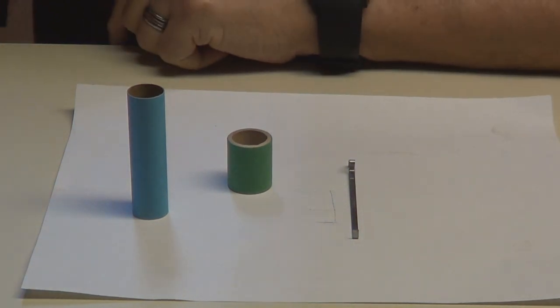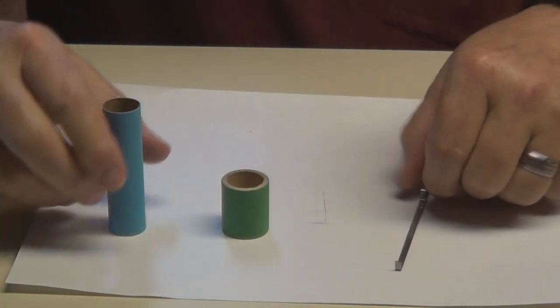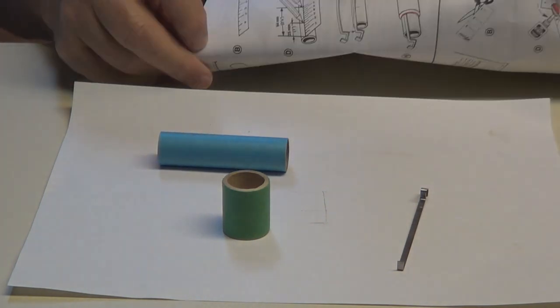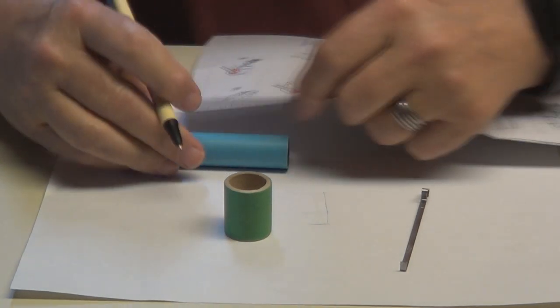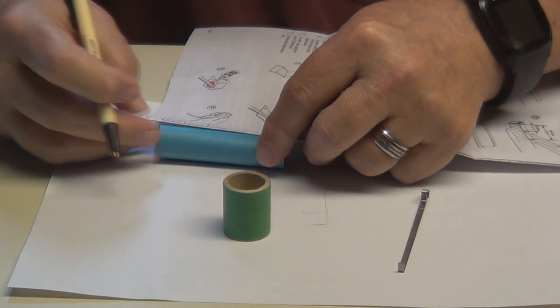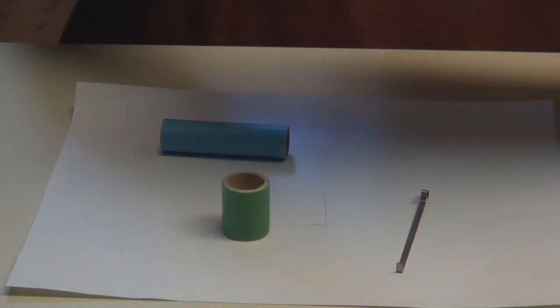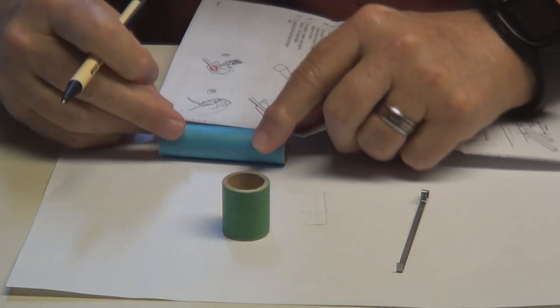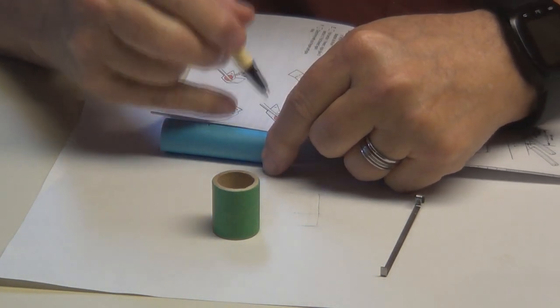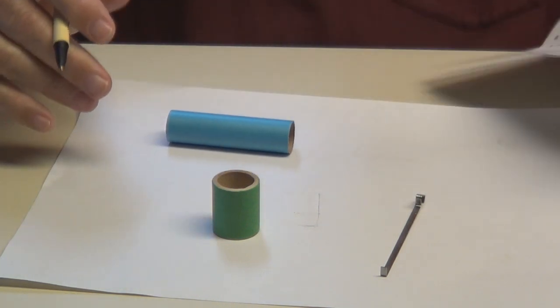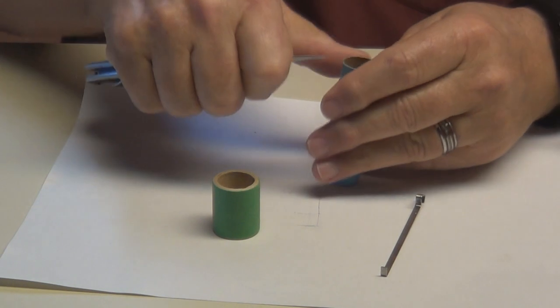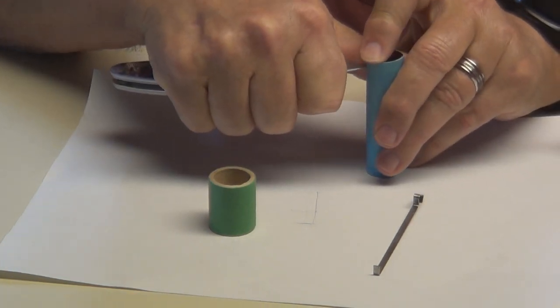First thing we're going to do is build the engine compartment. You need these two little tubes and the metal piece. What it says to do is take your drawing thing here and measure off one inch and mark it. We need another mark at two and a half inches. Cut an eighth inch wide slit as shown at the two and a half inch mark. We'll take a little knife and cut us a slit right there.